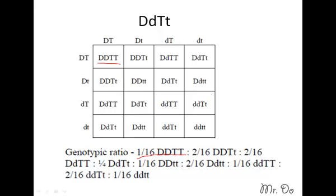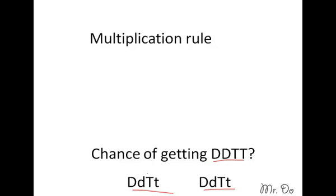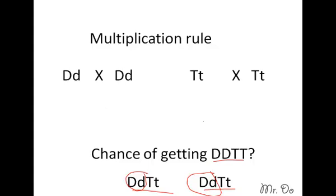Doing the dihybrid cross can take around 5 to 10 minutes. Let's do it the short way. We're given heterozygous for both traits and asked to find the dominant for both traits using the multiplication rule. This method is from algebra, though biology teachers don't usually teach it. The first step is to isolate the alleles — separate them. You isolate the allele for D and cross it with the other side, then do the same for T.